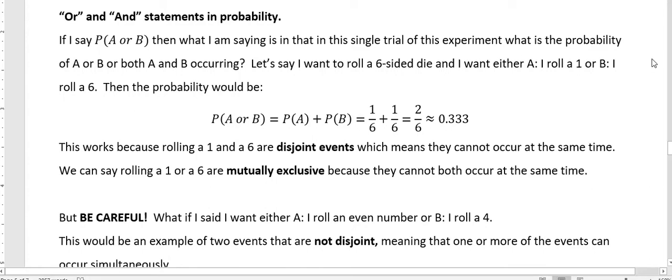Hi, it's Carly McEvoy. I want to talk about and and or statements in probability. If I say the probability of A or B, then what I'm saying is that in this single trial of this experiment, what is the probability of A or B or both A and B occurring?